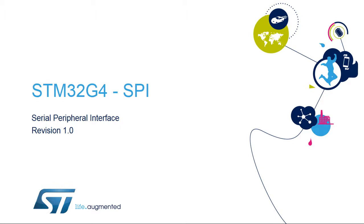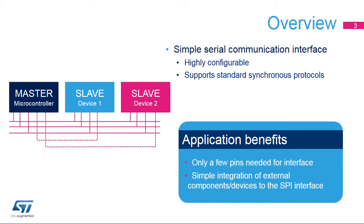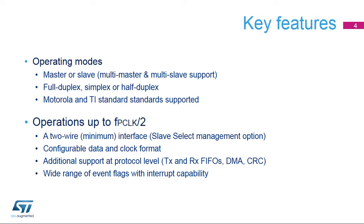Hello and welcome to this presentation of the STM32 Serial Peripheral Interface. The Internal Serial Peripheral Interface, or SPI, provides a simple communication interface allowing the microcontroller to communicate with external devices. This interface is highly configurable to support many standard protocols. Applications benefit from the simple and direct connection to components, which requires a few pins. Thanks to the highly configurable capabilities of the SPI, many devices can be simply accommodated in the existing project. The STM32 SPI offers various operating modes that are explained in more detail in this presentation.